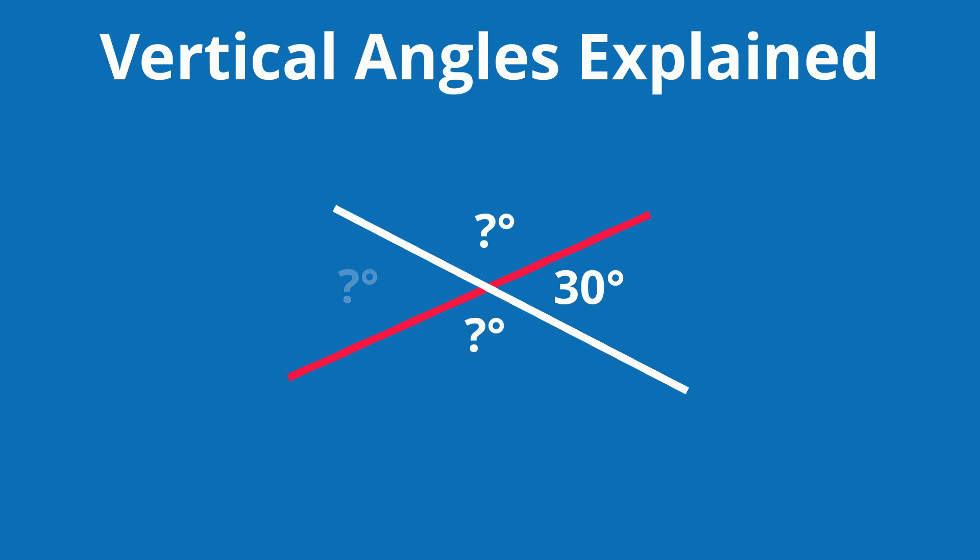Because angle B is vertically opposite 30 degrees it must be 30 degrees. Now a full circle is equal to 360 degrees. So that leaves 360 minus 2 times 30 which is 300.